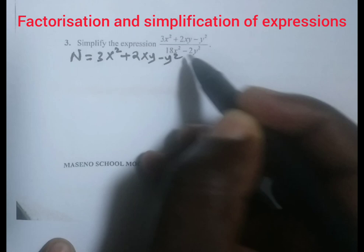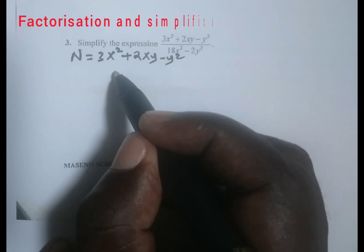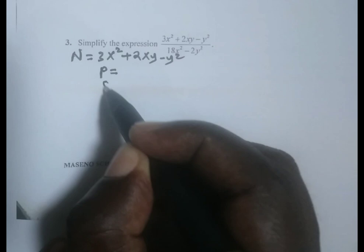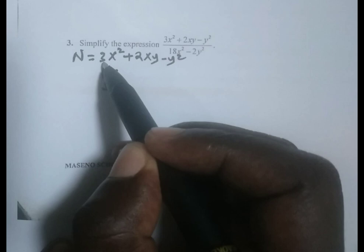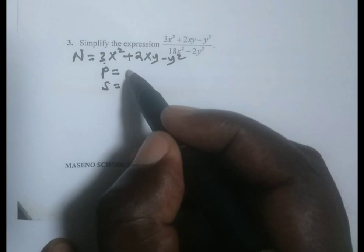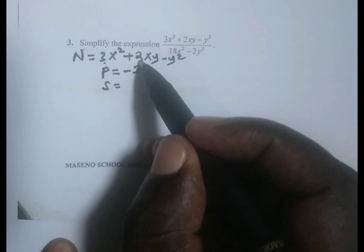We are going to simplify using product-sum factor method. To get the product, you take the coefficient of the quadratic term which is 3 times c which is negative 1, giving us negative 3. And the sum is going to be equal to 2, which is the coefficient of the linear term.